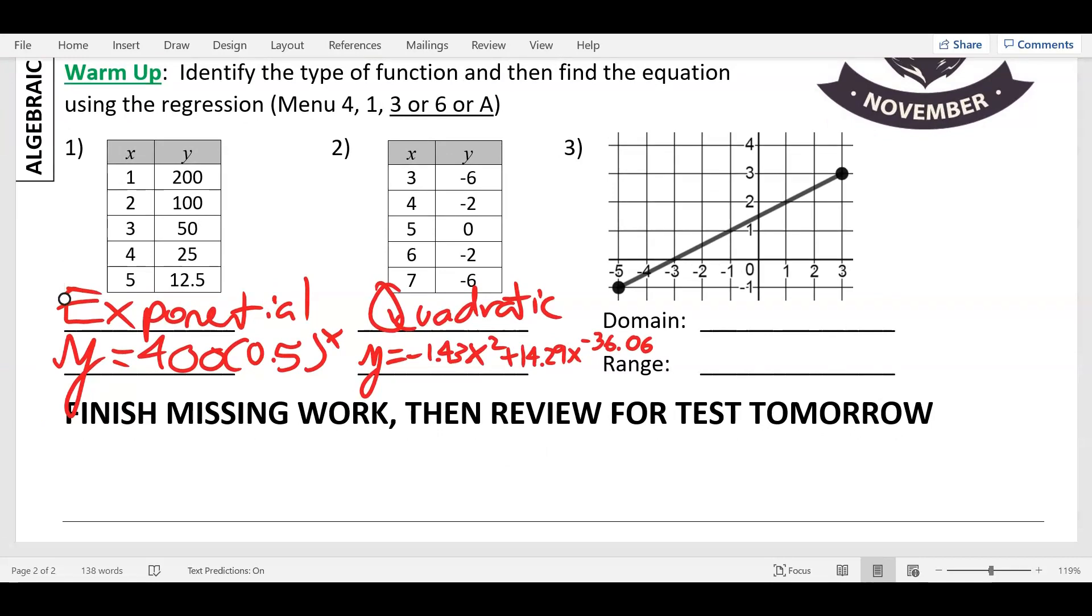So again, that is how you get the scatterplot and then the regression to get the equation. Also, on your review and your test, you have domain and range. We've done this, but we must return to do this. So number three, what is domain, X or Y? Domain is X. And range is what? Y. So let's go ahead and put X and Y here. You have to remember what variable it is. If you get it mixed up, you'll get it wrong.